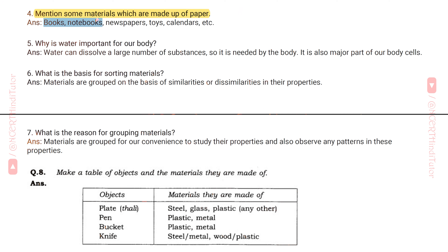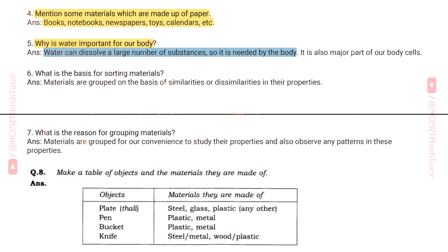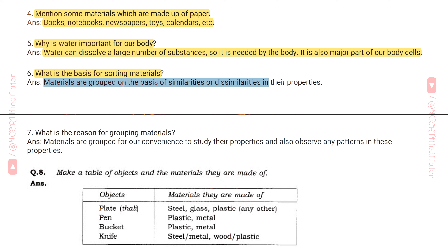Answer: Books, notebooks, newspapers, toys, calendars, etc. Question 5: Why is water important for our body? Answer: Water can dissolve a large number of substances, so it is needed by the body. It is also a major part of our body cells. Question 6: What is the basis for sorting materials? Answer: Materials are grouped on the basis of similarities or dissimilarities in their properties.